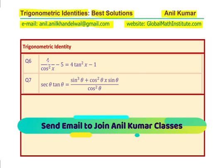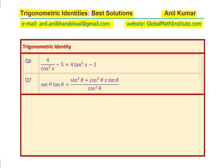Question number 6 is 4 over cos square x minus 5 equals 4 tan square x minus 1, and question 7 is secant theta tan theta equals sin cube theta plus cos square theta times sin theta divided by cos square theta.